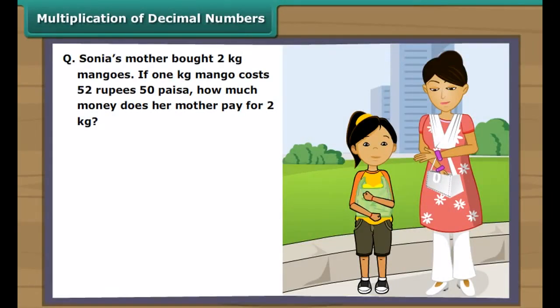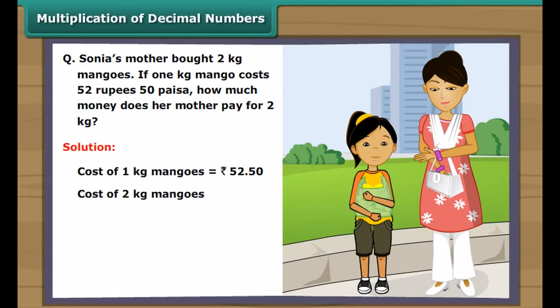Let us practice a word problem based on multiplication of decimal numbers. The cost of 1 kilogram of mangoes is 52 rupees 50 paisa. The cost of 2 kg mangoes equals 52.50 multiplied by 2 rupees. Multiplying the numbers, we get 10,500. Adding the decimal point after two digits from the right, we get 105. Thus, Sonia's mother needs to pay 105 rupees for 2 kg of mangoes.